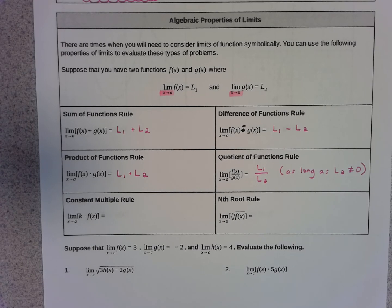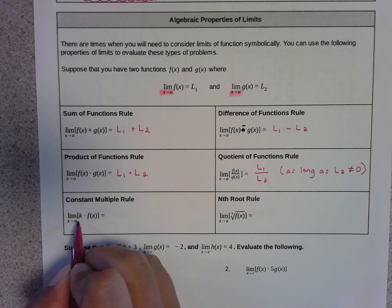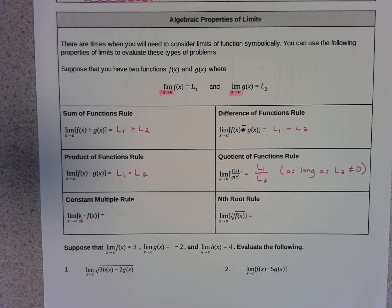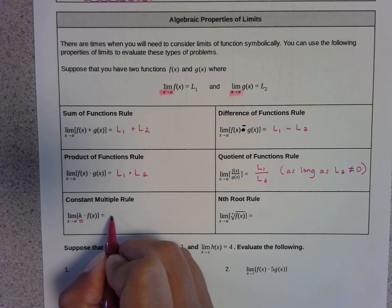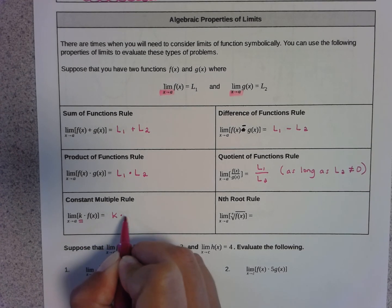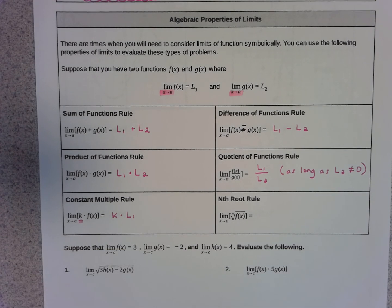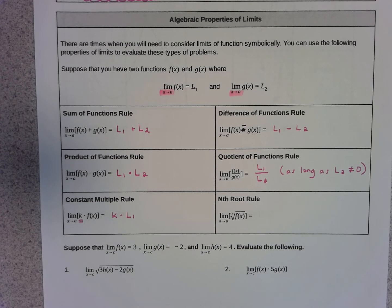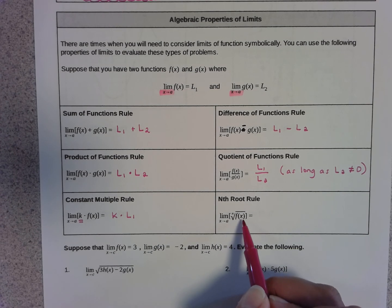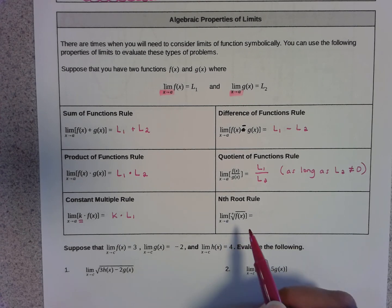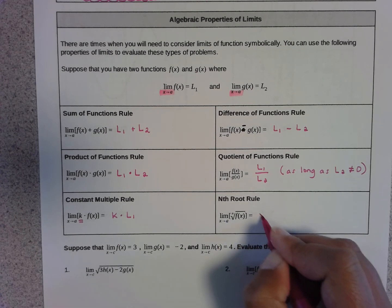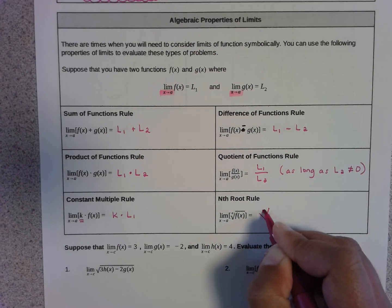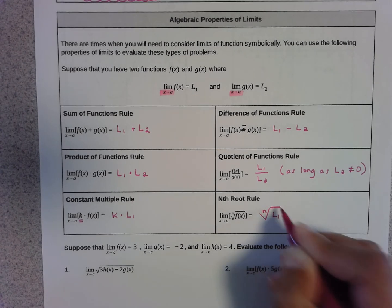The constant multiple rule says that if you take a function and multiply it by some constant number, to find the limit you can just multiply the limit by that same number. So if you have 2 times f(x), you can do 2 times the limit. The nth root rule says that if you want to take the nth root — like the square root or cube root — of a function, you can just take that same root of the limit.